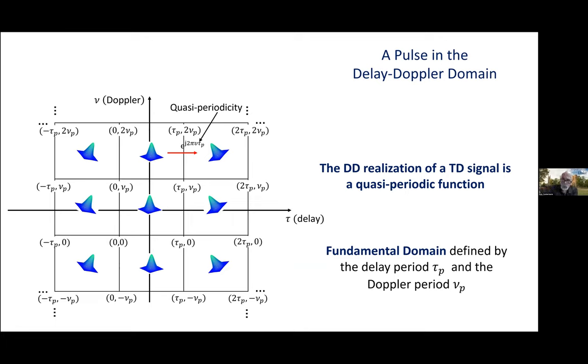Now, we have to do a little bit of mathematics. So, the Heisenberg uncertainty principle implies that it's not possible to simultaneously localize the signal in time and frequency. But we can satisfy the Heisenberg uncertainty principle by starting with a pulse in the delay-Doppler domain and extending it quasi-periodically.